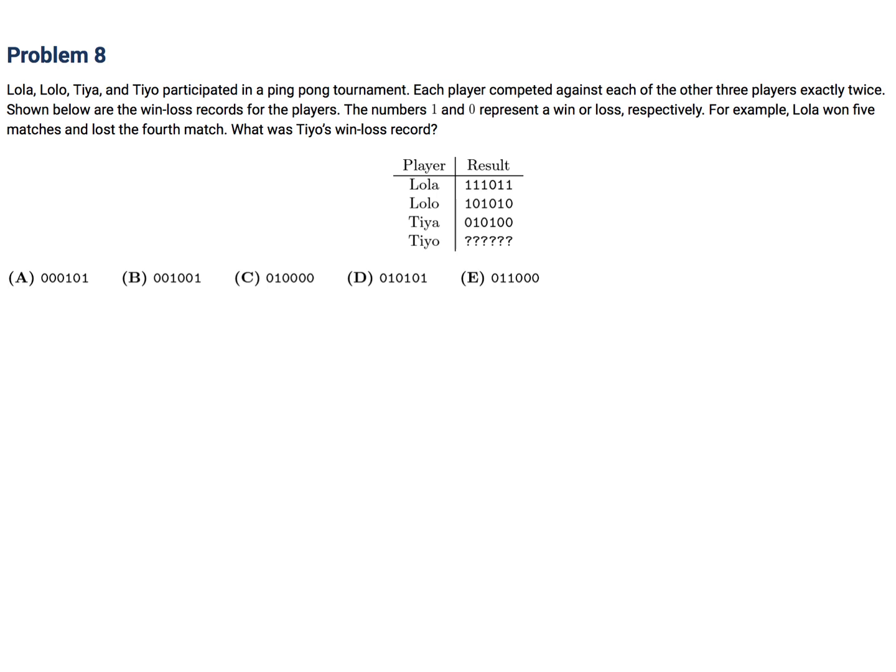Lola, Lolo, Tia, and Tio participated in a ping-pong tournament. Each player competed against each of the other three players exactly twice. Shown below are the win-loss records for the players. The number 1 and 0 represent a win or a loss, respectively. For example, Lola won 5 matches and lost the 4th match. What was Tio's win-loss record? Okay. So I'm going to have to draw this a little bit bigger. 1, 1, 1, 0, 1, 1. Then Lola, 1, 0, 1, 0, 1, 0.